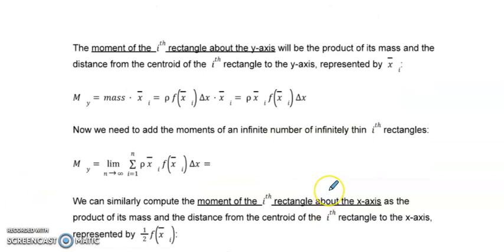So now what I want to do is find the moments of that ith rectangle. We want to do it around the y-axis. And of course, we're also going to have to do it next around the x-axis. So let's start with the moment around the y-axis. And that's going to be the product of the mass and the distance from the centroid of the ith rectangle. Basically, the centroid of the ith rectangle is represented by x bar sub i. So the mass, or excuse me, the moment with respect to the y-axis is mass times x sub i.